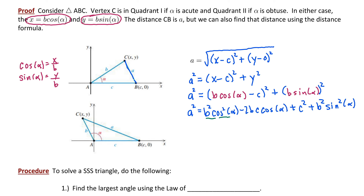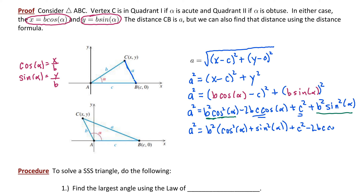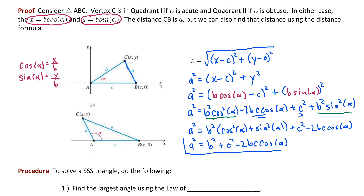Notice that the first and last terms share a greatest common factor of B squared. Factoring it out gives A squared equals B squared times (cosine squared alpha plus sine squared alpha), plus C squared minus 2BC cosine alpha. By the Pythagorean identity, cosine squared alpha plus sine squared alpha equals 1, so the expression simplifies to B squared plus C squared minus 2BC cosine alpha — the familiar law of cosines.